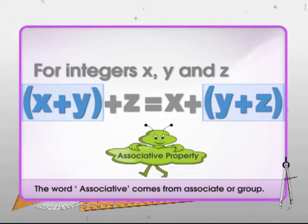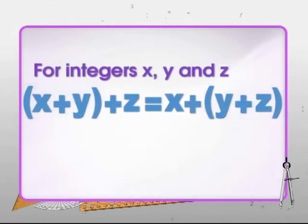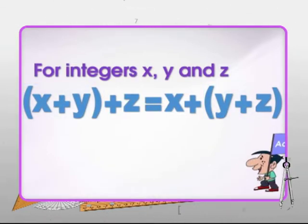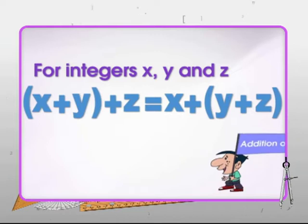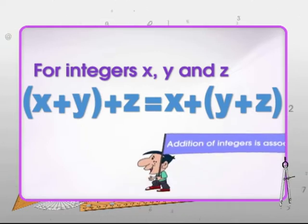This property is called the associative property. The word associative comes from associate or group — it refers to grouping. The associative property holds for integers under addition.